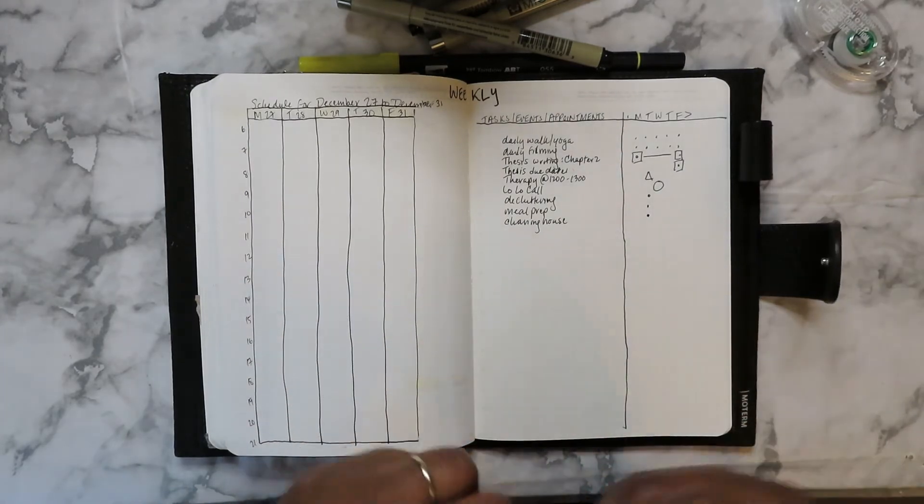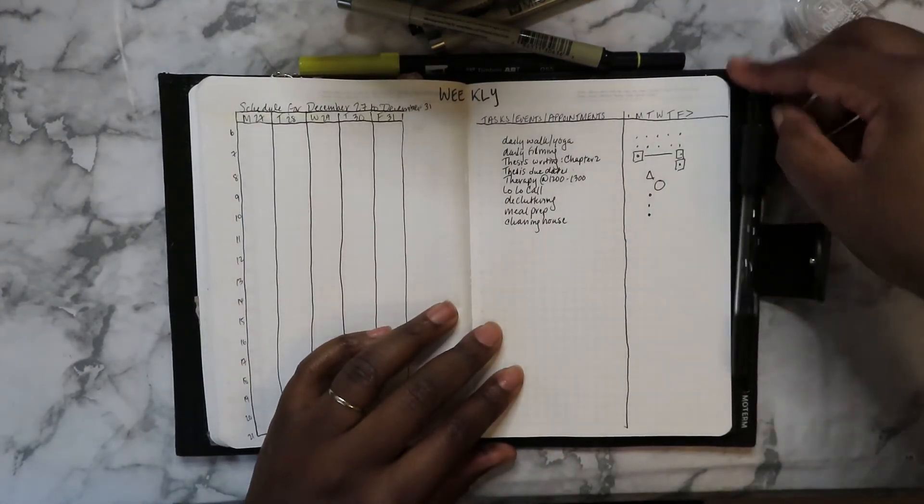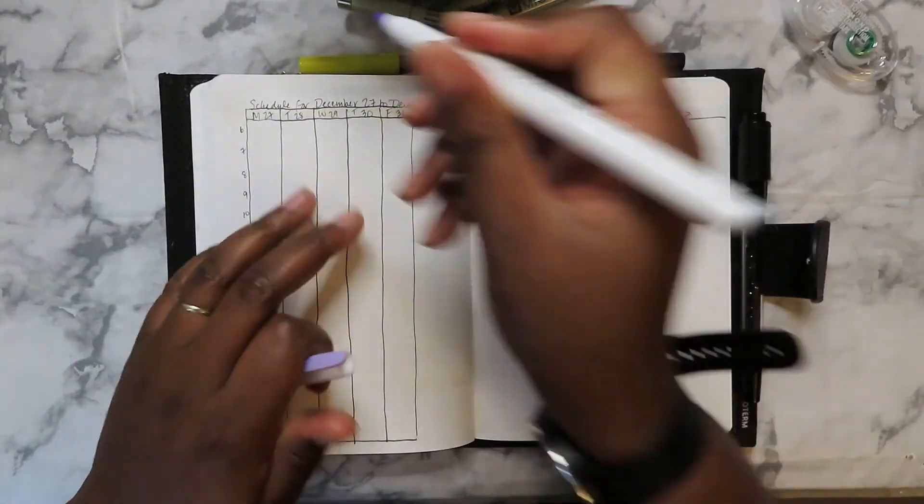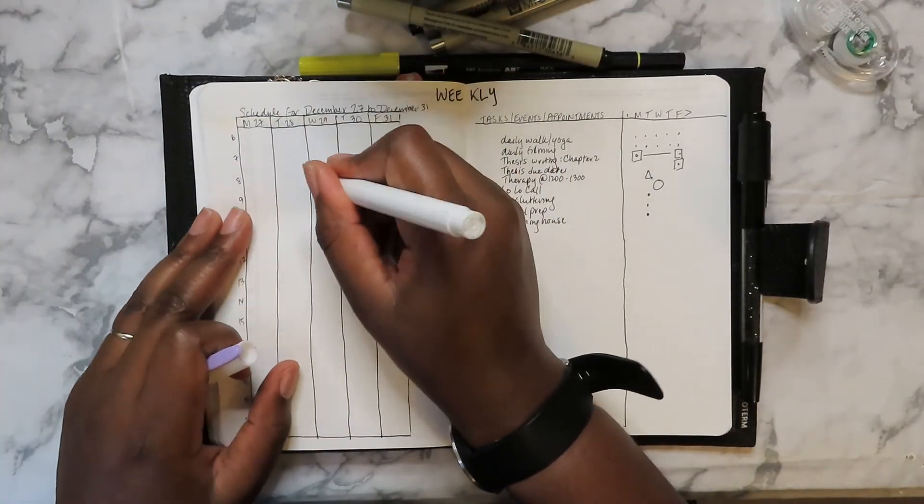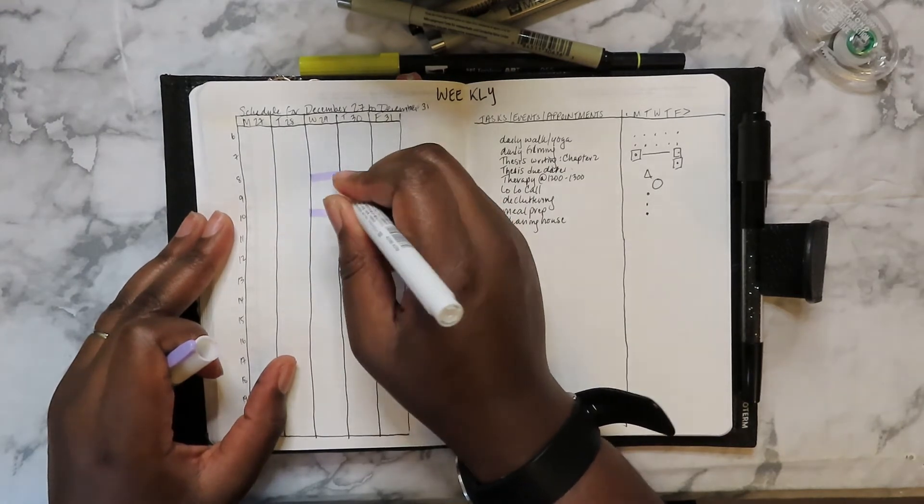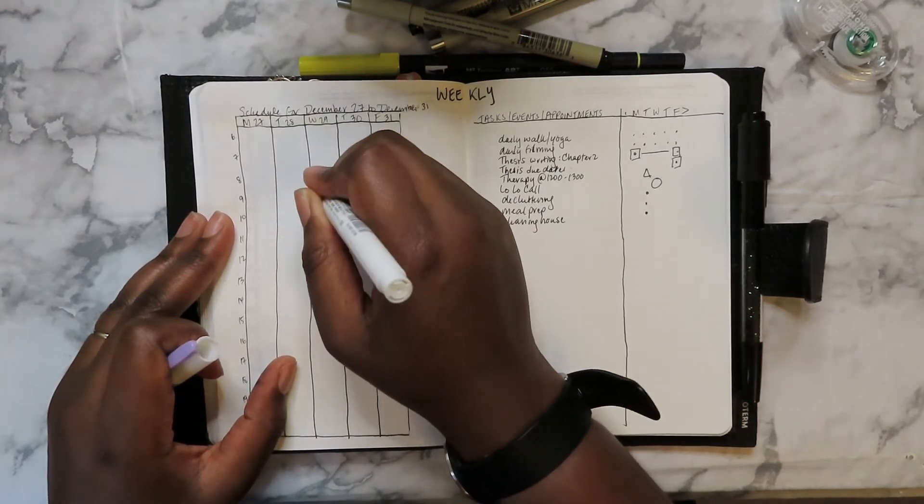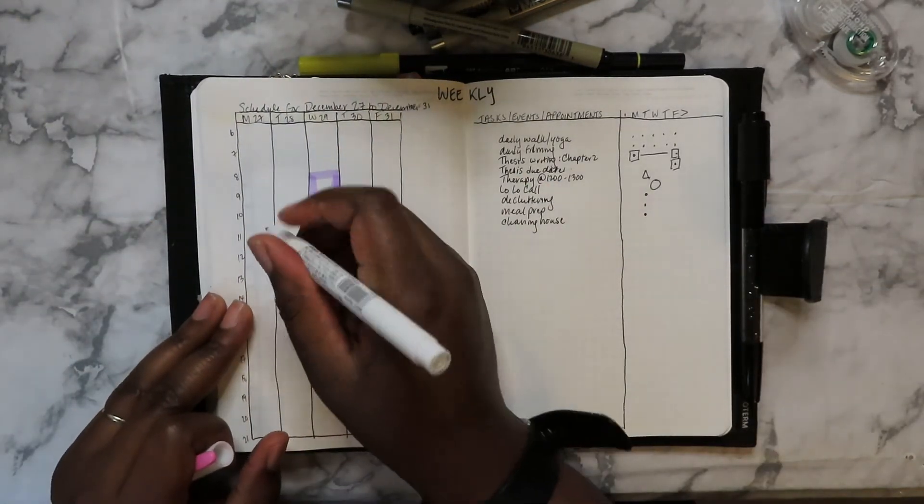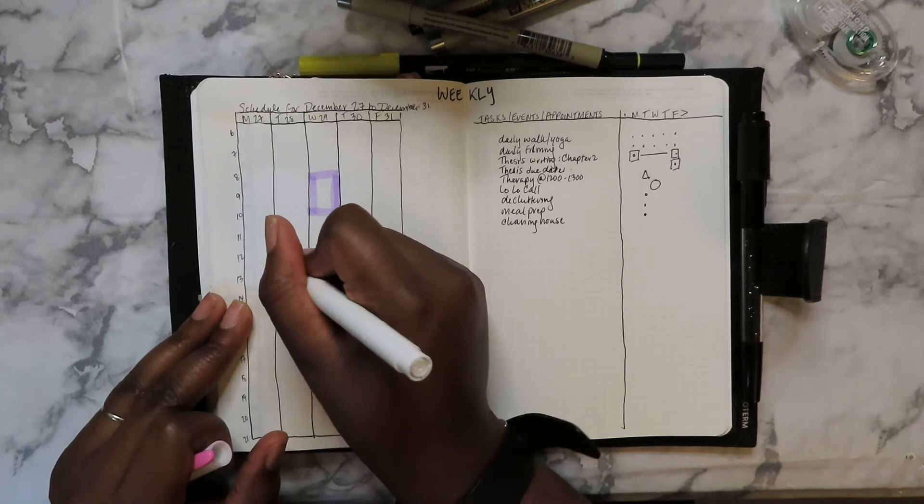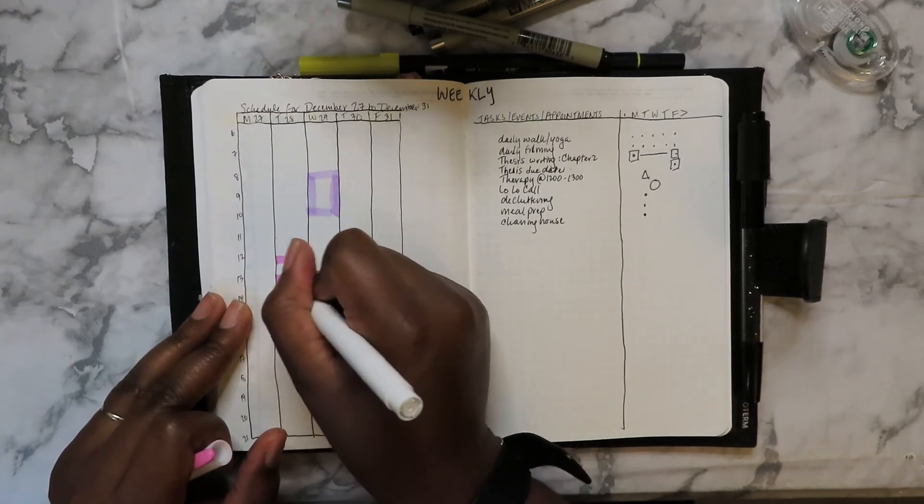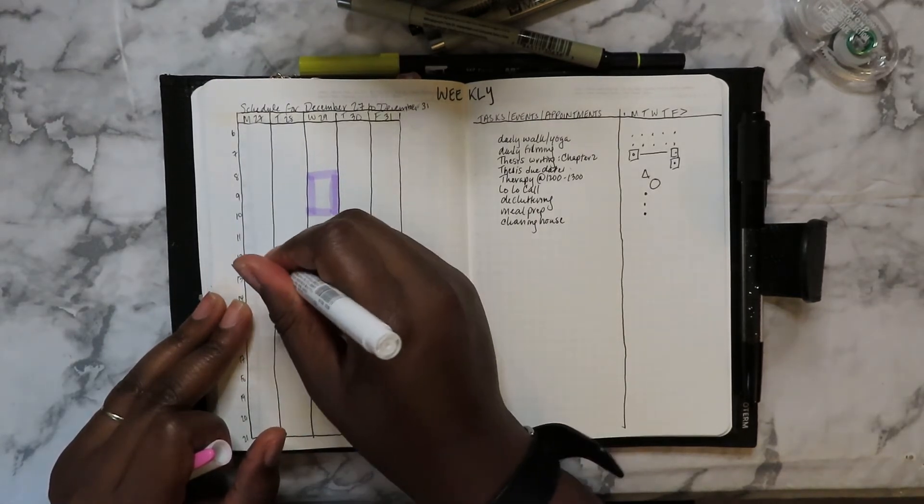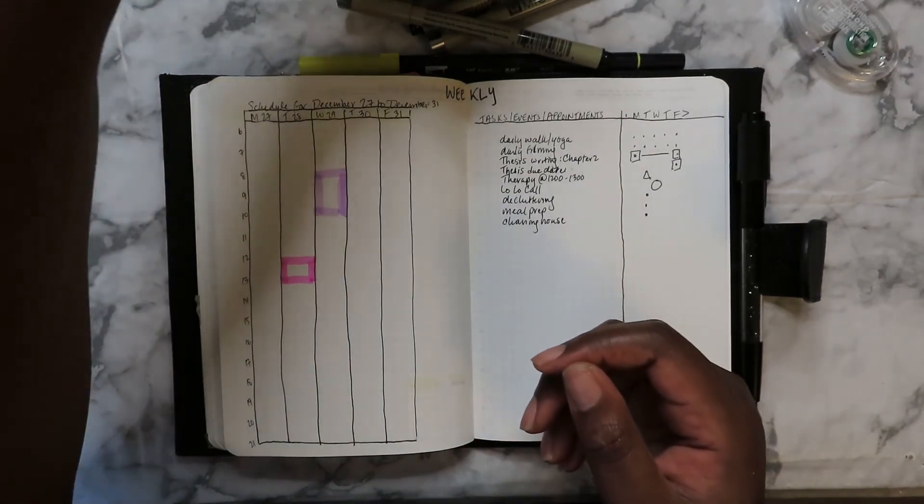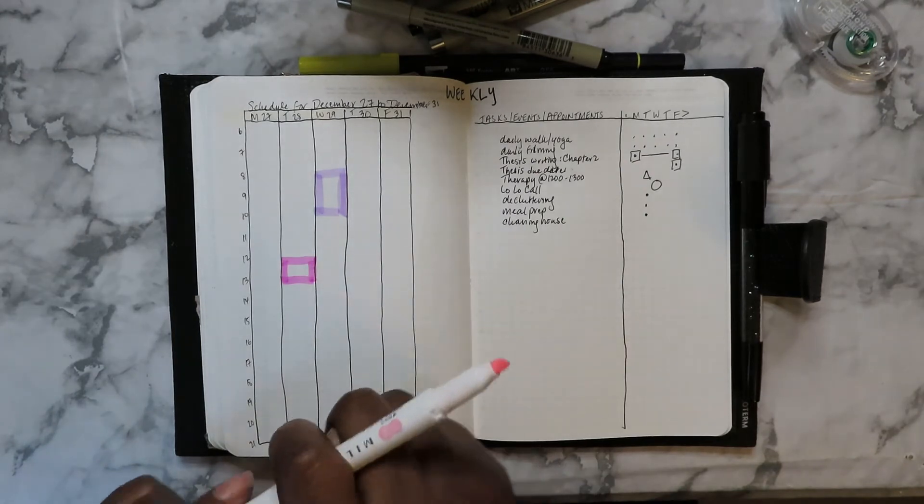Yeah, that looks good. So let's plan for it. Let's put in my sister's call, which is usually from eight to ten. My therapy is from twelve to one.